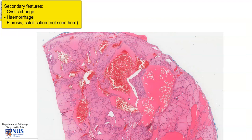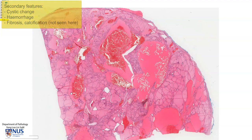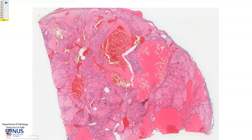So here we have the secondary changes of cystic change as well as hemorrhage, and these are quite common in multinodular goiters.